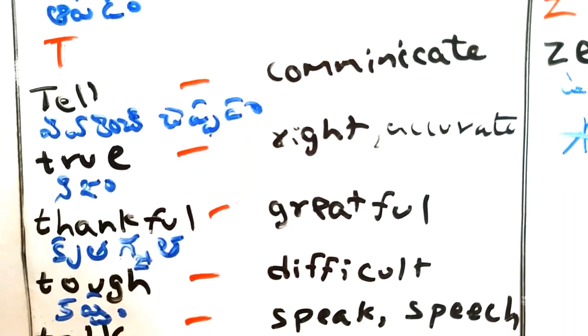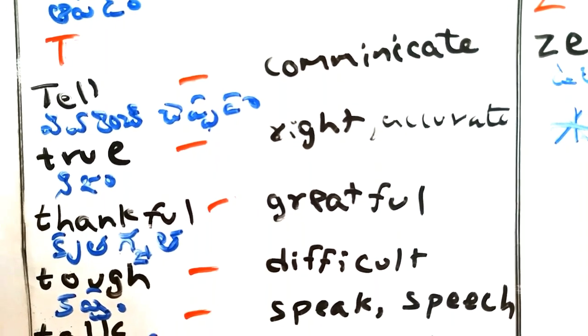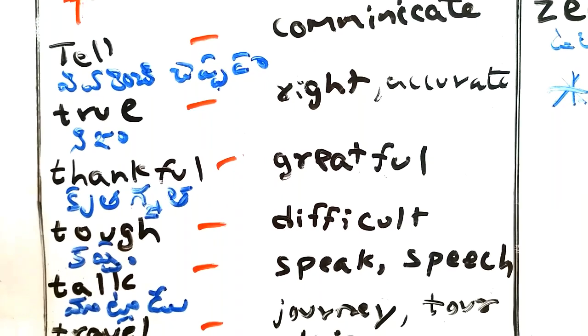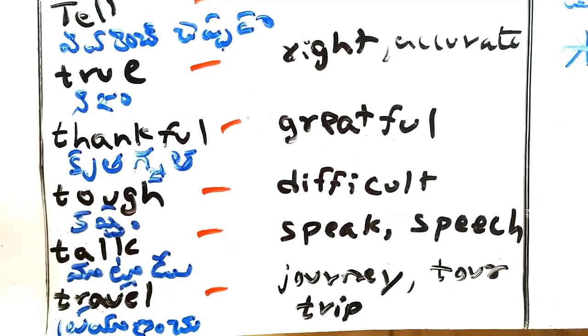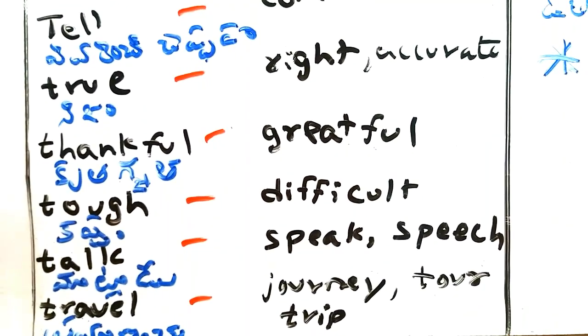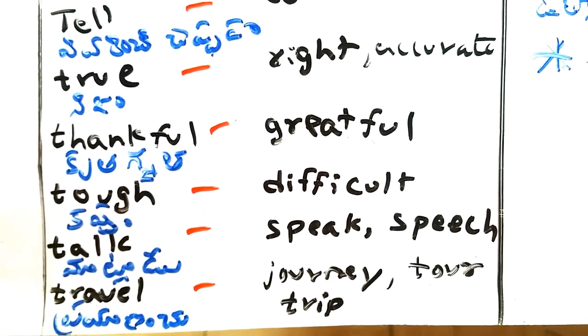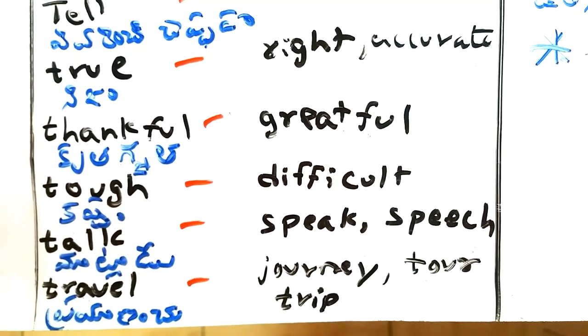Tell - chepadam, communicate. True - nism, right, accurate. Thankful - krithagnata, grateful. Tough - kastam, difficult. Talk - matladu, speak, speech. Travel - prayani, journey, tour, trip.